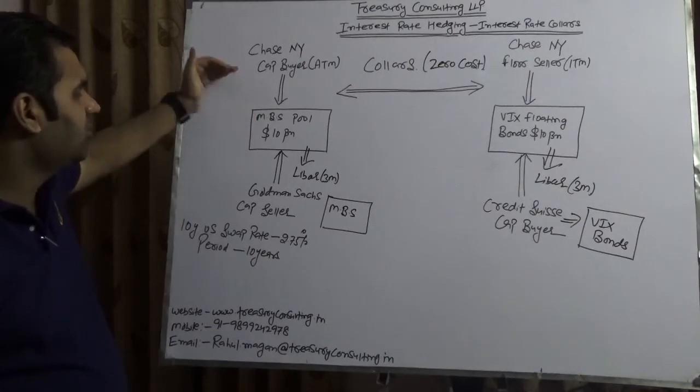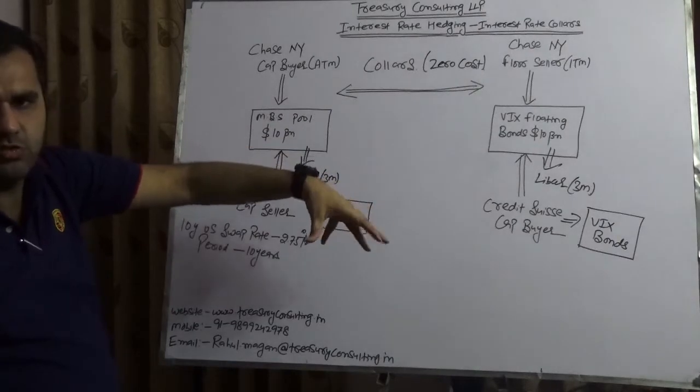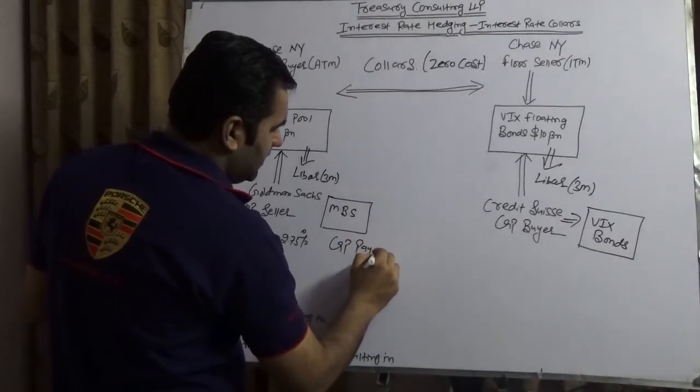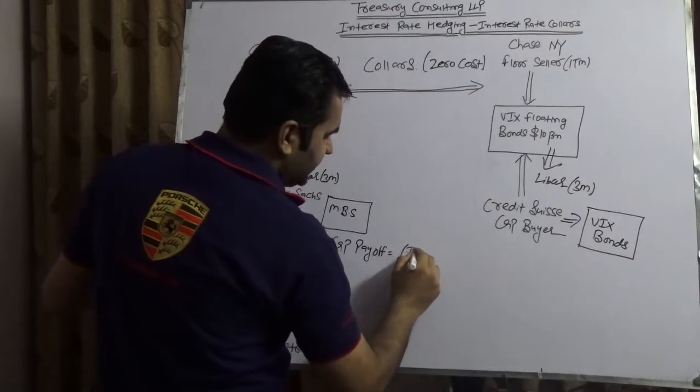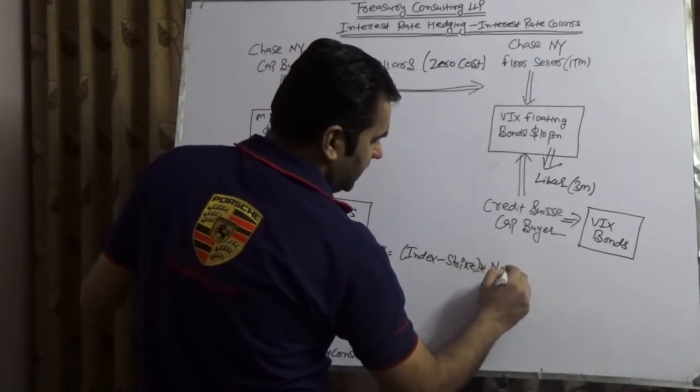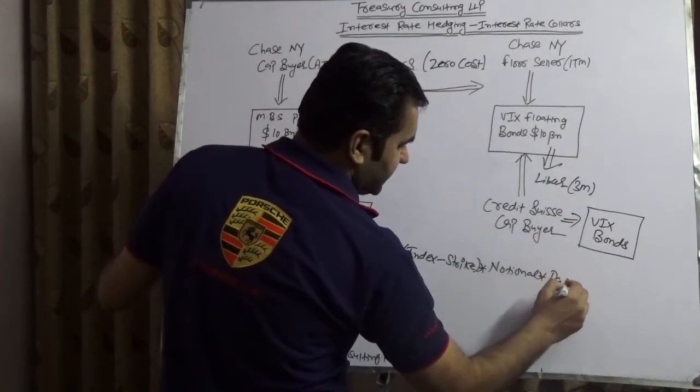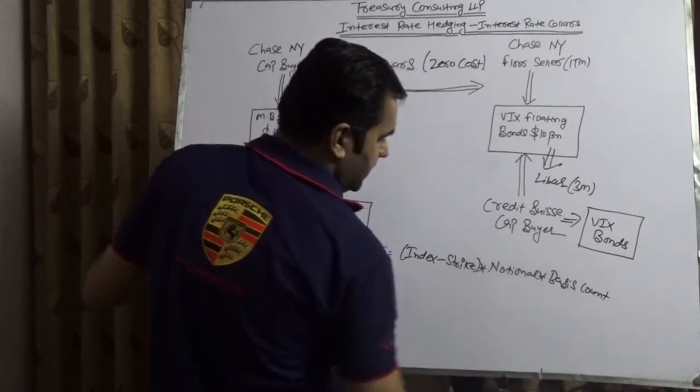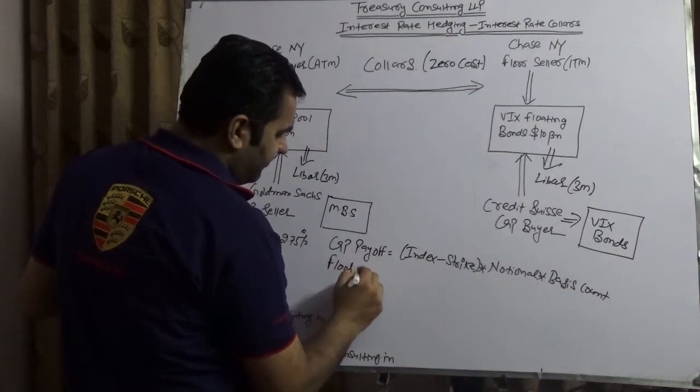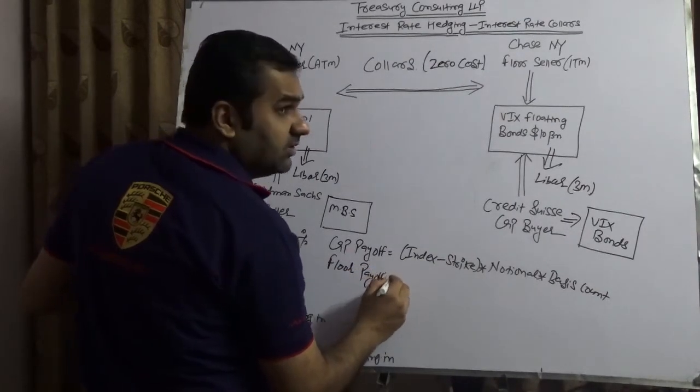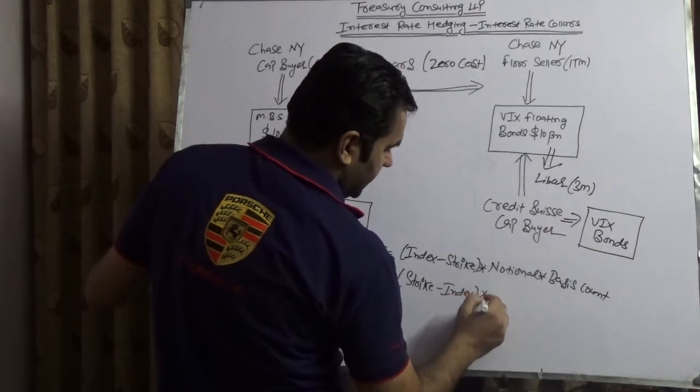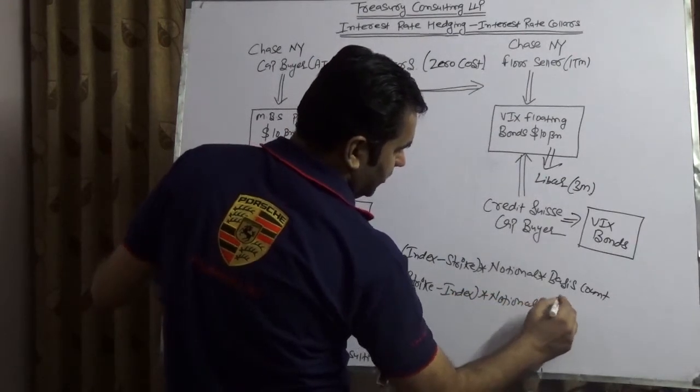Cap is nothing but once it will go higher, you will receive. And floor if it gets lower, then you need to pay. So the payoff profile would happen like that. Cap payoff would be index minus strike into notional into basis count. We are assuming basis count as actual by 360. Floor payoff would be strike minus index into notional into basis count.